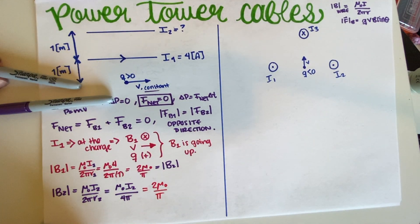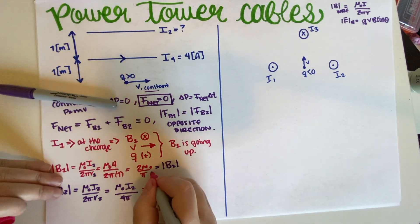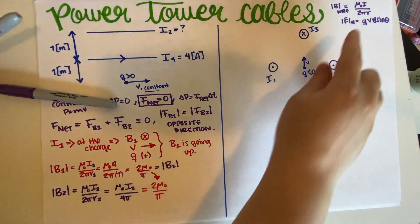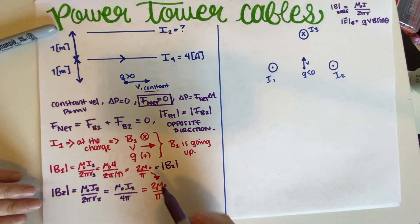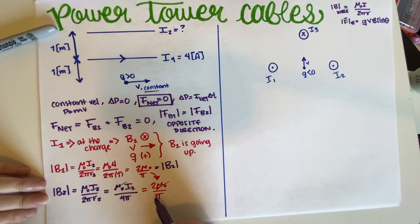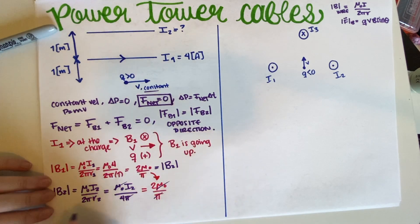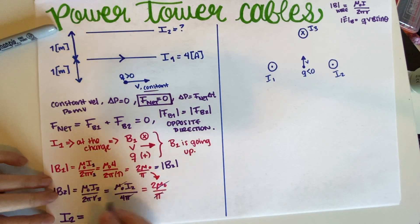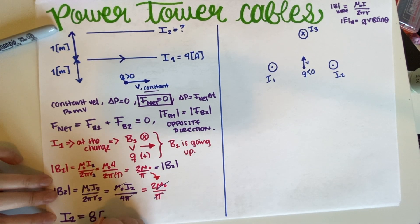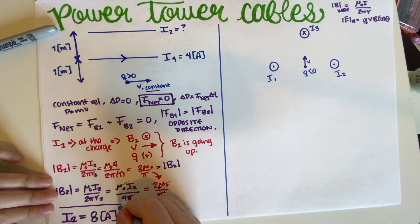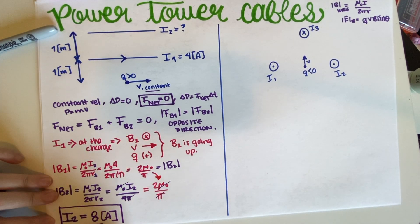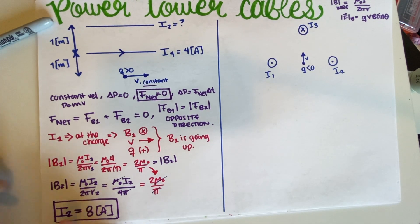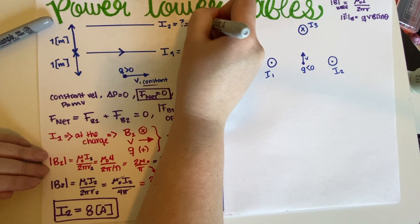Setting B1 = B2 and substituting: 2μ₀/π = μ₀I₂ / (4π). The μ₀ and π cancel out, and solving gives I₂ = 8 amps. So the magnitude of the current in the upper wire must be 8 amps. Now we need to figure out the direction.